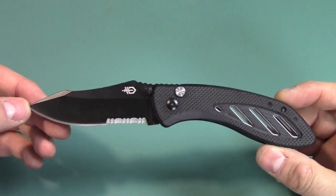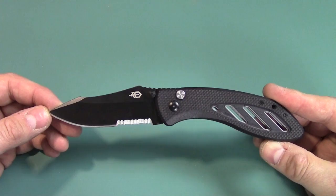7CR17MOV type of steel should give you a little hint on where this knife is made. And yep, I heard the right answer. It is made in China.